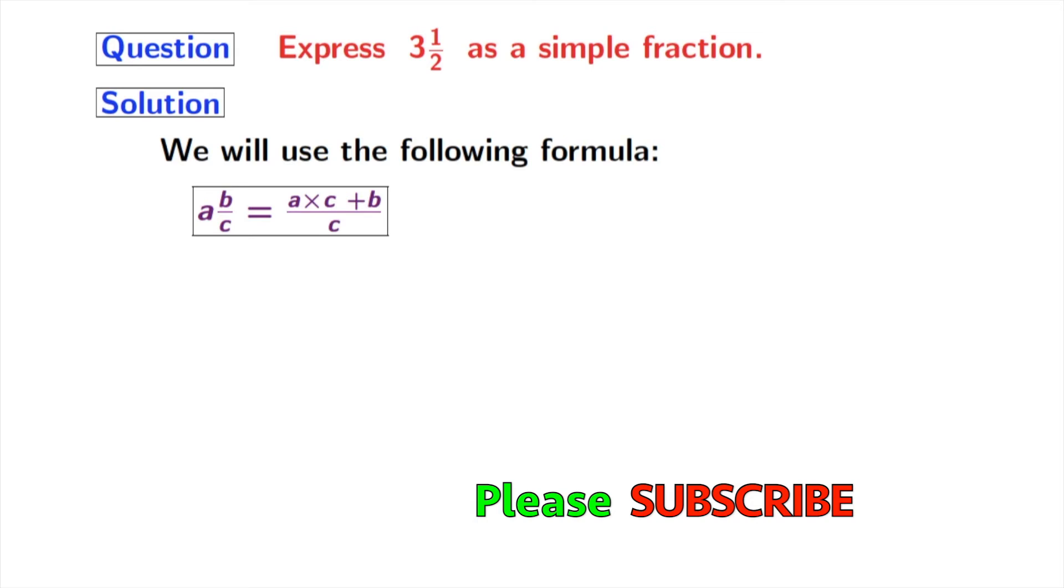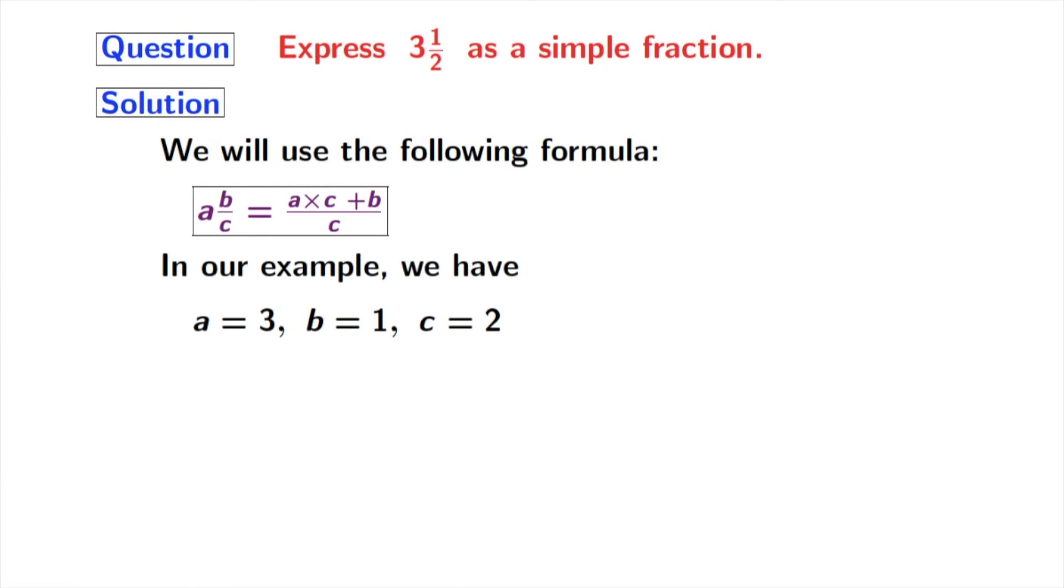A and B by C is equal to A times C plus B by C. In our example, we have A equal to 3, B equal to 1 and C equal to 2.